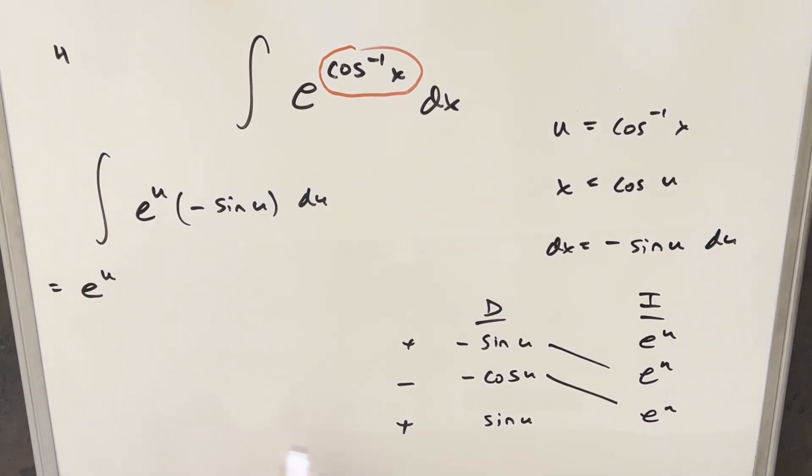So we'll have part of the solution on the diagonals, and what I'll do is factor an e to the u out of this. Now here, the second one is going to be minus times minus or plus. I'm going to kind of change the order, and we'll have plus cosine u here, and then we'll take this minus sine u over here.